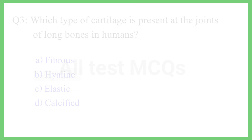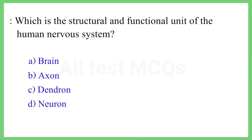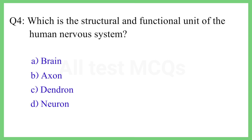Question No. 4. Which is the structural and functional unit of the human nervous system? The correct answer is Option D: Neuron.